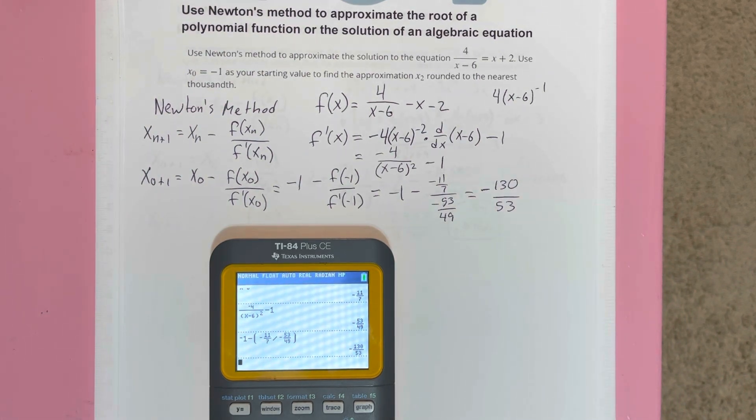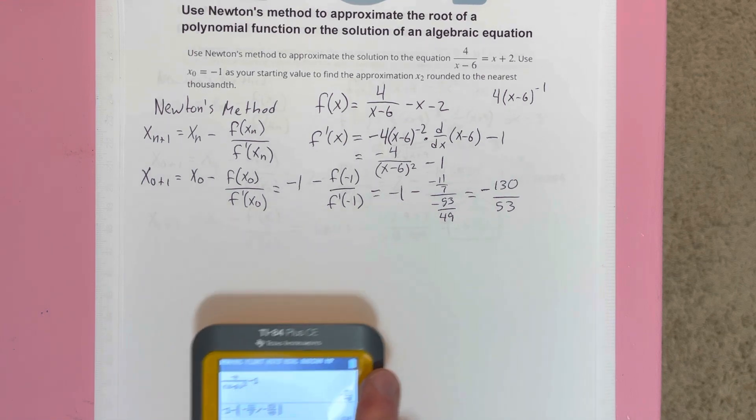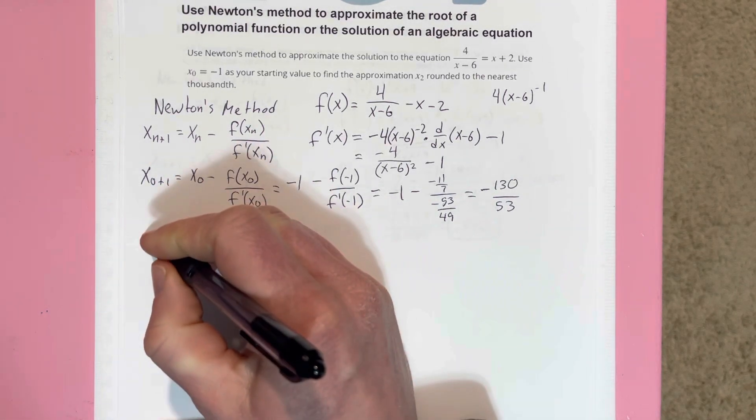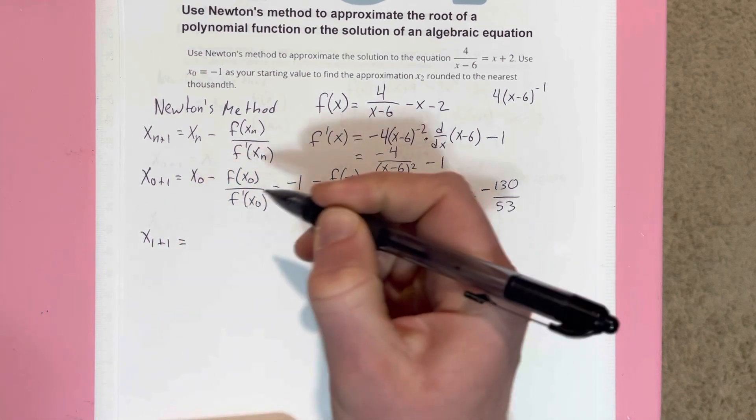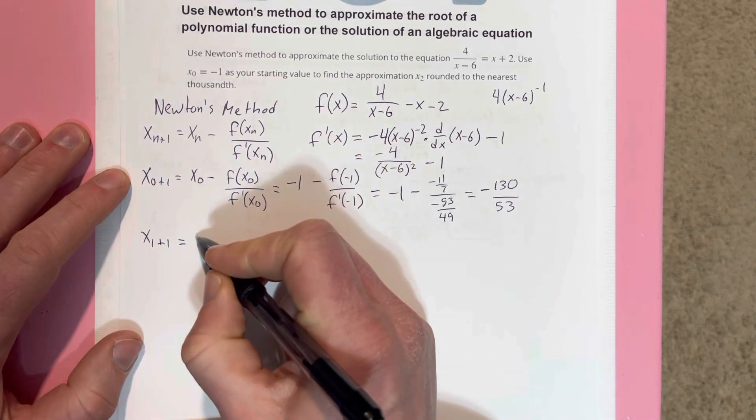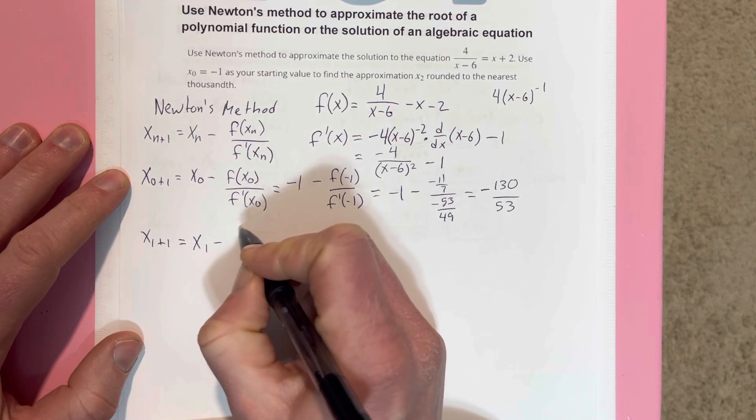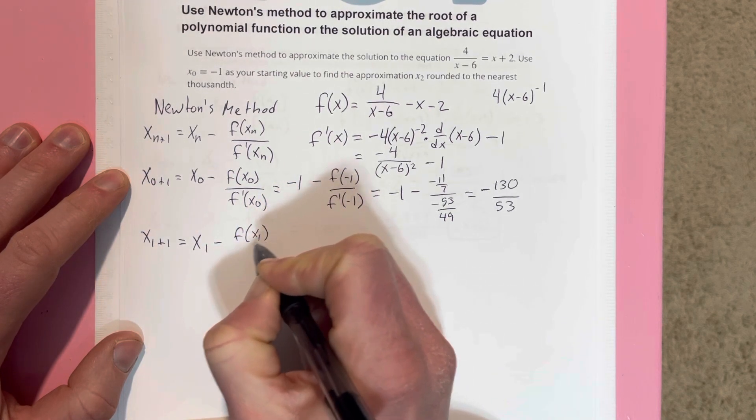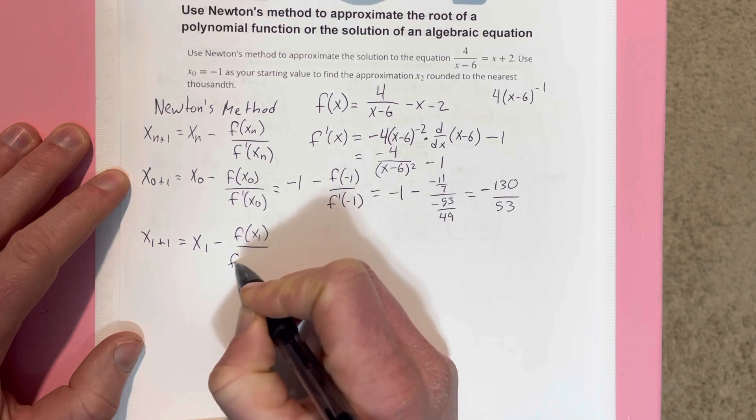I'm going to go ahead and do the second iteration. Let's get this as a decimal real quick. Okay, so we're in a good spot. Let's go ahead and find the second iteration. So that'd be x₂ is equal to x₁ minus f(x₁) over f'(x₁).